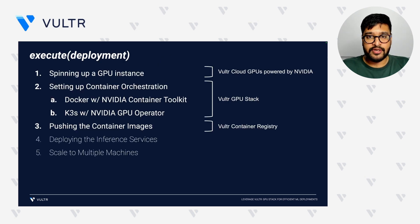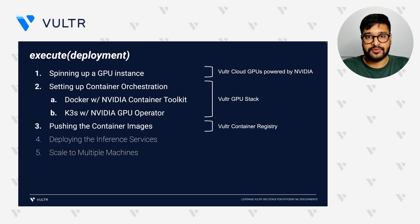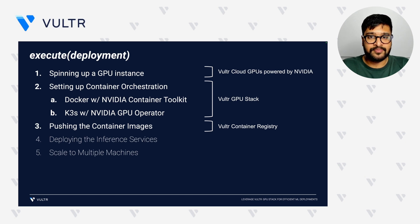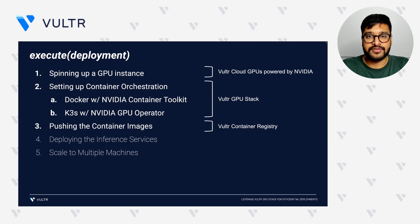This sequence ensures a seamless and interactive experience for users whether they prefer text-based or voice-based chats. Now let's dive into the actual deployment steps. We will start by spinning up a GPU instance with a pre-configured GPU stack, then set up container orchestration, and after that push container images to a private container registry. These steps lay the foundation for deploying our machine learning models efficiently.